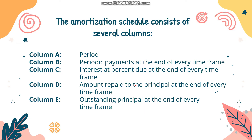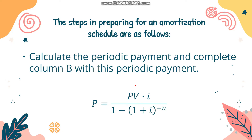In an Excel spreadsheet, write in column A: period; column B: periodic payments, which we will be computing; column C: interest due at the end of every time frame; column D: amount repaid to the principal at the end of every time frame; and column E: the outstanding principal at the end of every time frame. These are the steps in doing our amortization schedule.